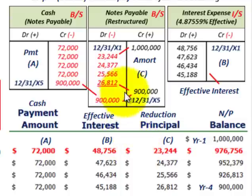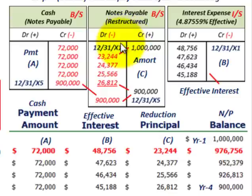That takes care of debt restructuring by modifying the terms of a loan, viewed from the debtor's perspective with no gain on the restructuring. Next, we'd have to look at it from the creditor's perspective, where there's also no gain on the restructuring of this loan.